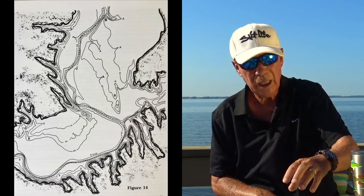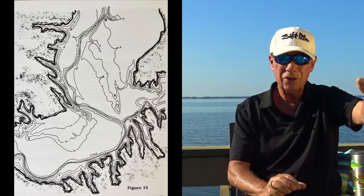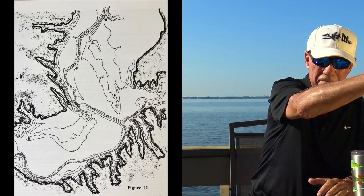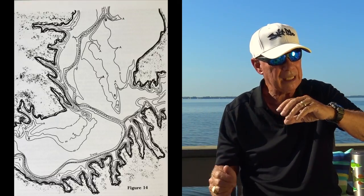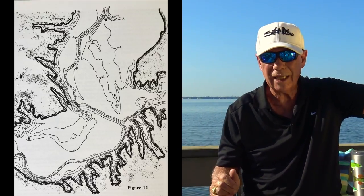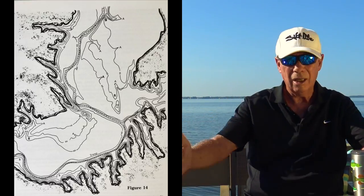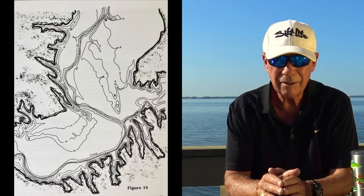We're going to start by noticing the main channel that runs through this reservoir. Sometimes it swings close to the bank on the right side of the picture, and sometimes it swings back over to the other side. This is how almost every map you'll ever look at is going to look. In a reservoir, deep water means channels — side channels, main channel. As we look at this map, we're going to look at that, and we're also going to look at the structure.